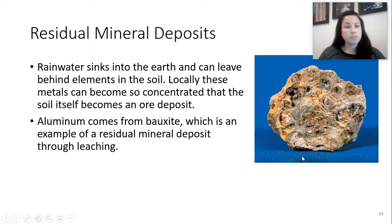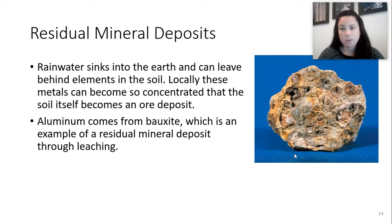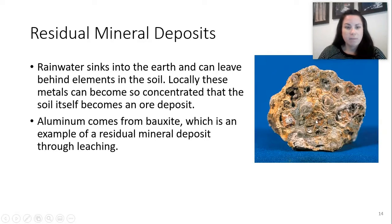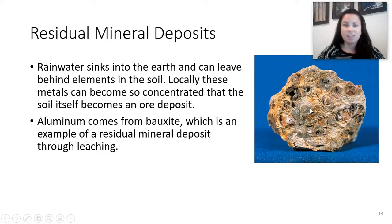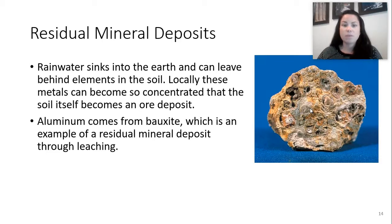We also have residual mineral deposits. This is where rainwater sinks into the earth and can leave behind elements in the soil. Locally, these metals can become so concentrated that the soil itself becomes an ore deposit. Here's an example involving aluminum, showing a residual mineral deposit formed through leaching — where rainwater seeps into the earth and creates deposits.